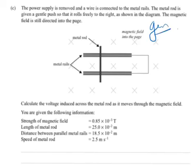Calculate the voltage induced across the metal rod as it moves through the magnetic field. You are given the following information: the strength of the magnetic field, the length of the metal rod, the distance between the parallel metal rails, and the speed of the metal rod.